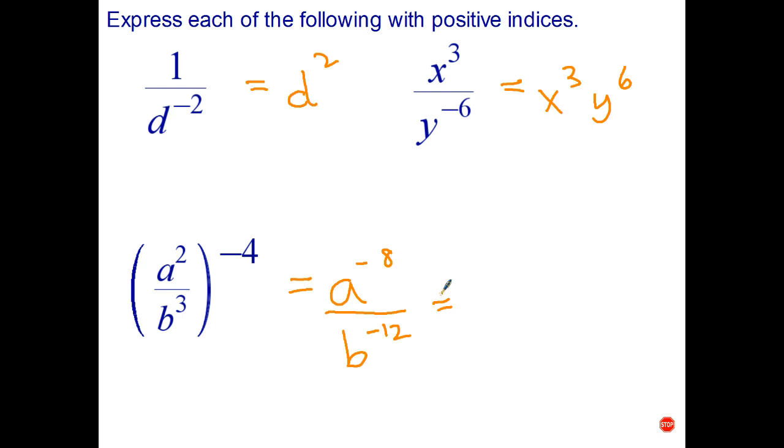Now the second thing I have to do is get rid of the negative indices. So a to the negative 8 in the numerator becomes a to the positive 8 in the denominator. B to the negative 12 in the denominator becomes b to the positive 12 in the numerator.